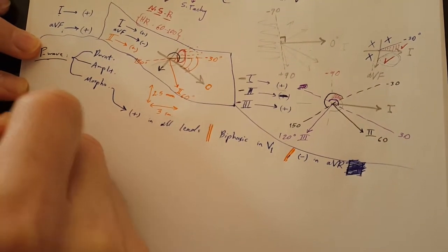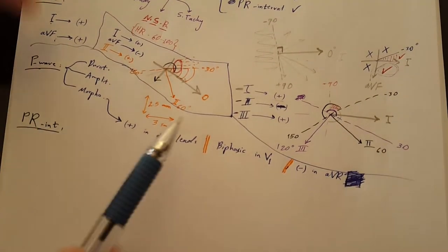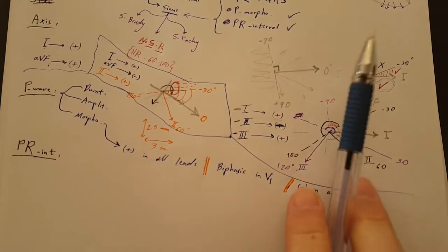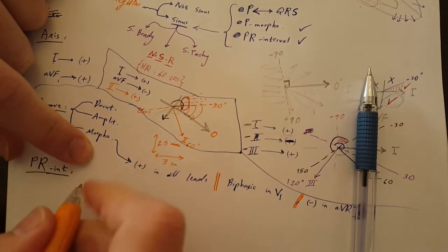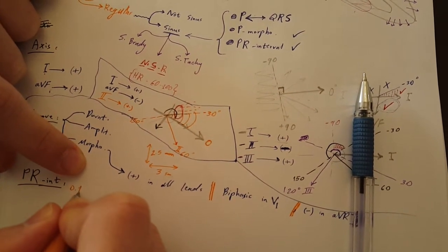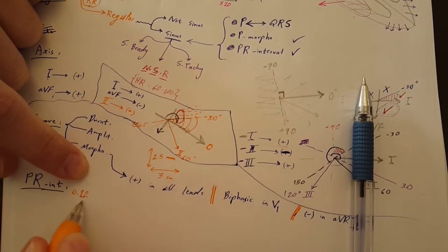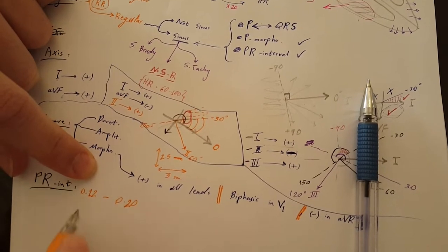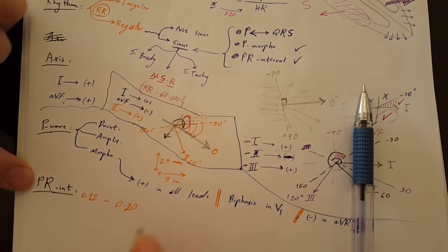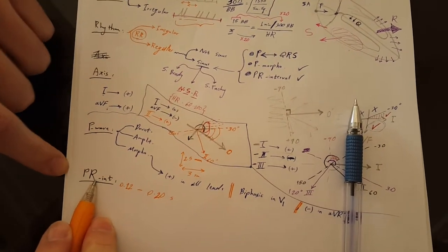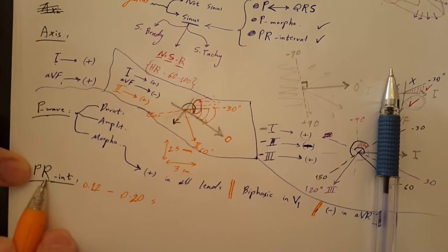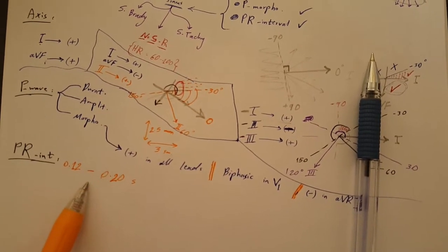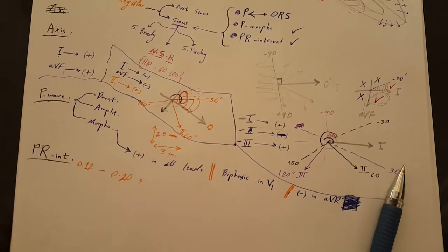The PR interval should be between 0.12 and 0.20 seconds — I remember it as 12 to 20. If prolonged, it suggests a block at the AV node. If shortened, something is bypassing the AV node delay, such as an accessory pathway in Wolf-Parkinson-White syndrome.